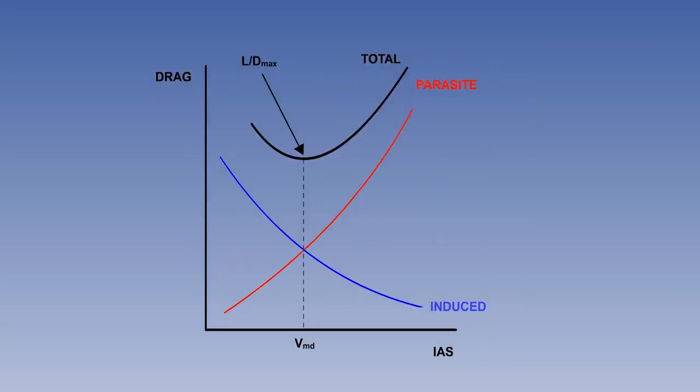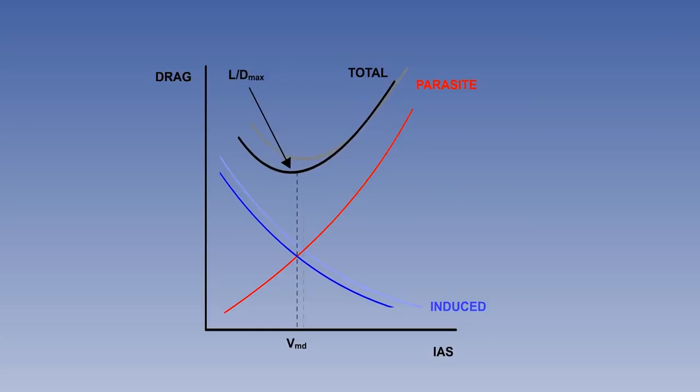As fuel is consumed, gross weight reduces, requiring less lift and reducing induced drag. The effect on total drag is that the curve moves down and to the left, as total drag and VMD are reduced.